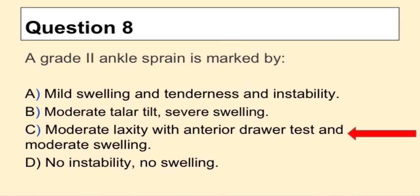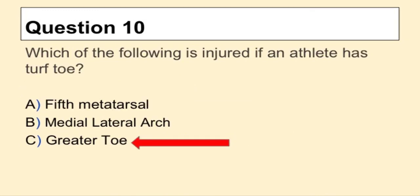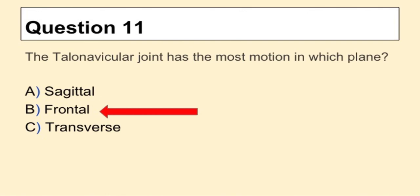Question 8: A grade 2 ankle sprain is marked by C — moderate laxity with anterior drawer test and moderate swelling. Question 9: Damage to the superficial peroneal nerve will result in B — loss of eversion. Question 10: Which of the following is injured if an athlete has turf toe? The answer is C — the greater toe, or big toe.